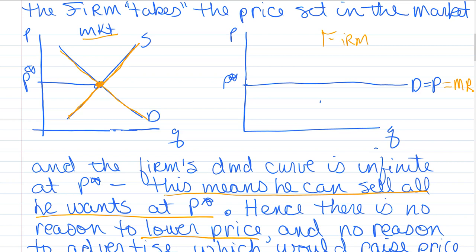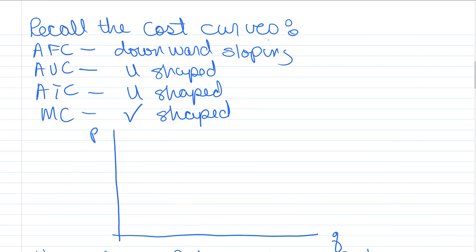First we're going to look at the break-even situation. But before I do that, I need to review all the cost curves with you. Remember that we have four major cost curves. We have average fixed costs, which are the cost of our fixed inputs like capital and long-term leases, pensions in big industry, etc. That is always downward sloping and not particularly important for the operating decision, but is important for profit or loss.